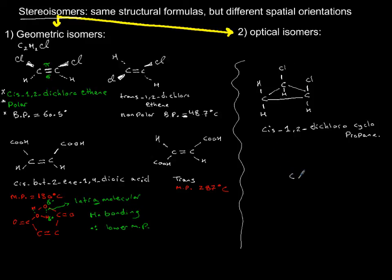And if I give you the trans version of it all I have to do is change position of one of the chlorines. So this is trans-1,2-dichlorocyclopropane. Next thing to discuss is optical isomers and that I will do on the next slide.